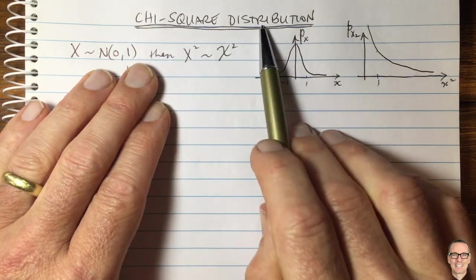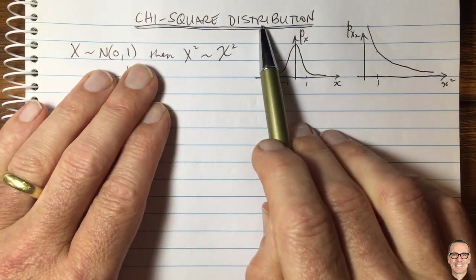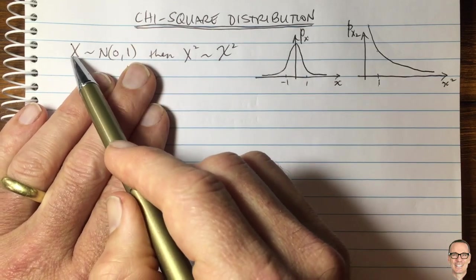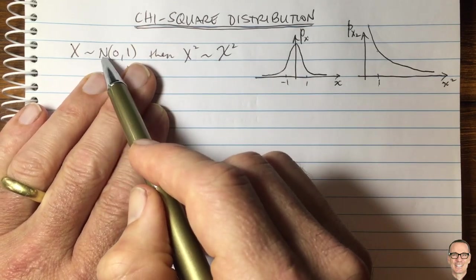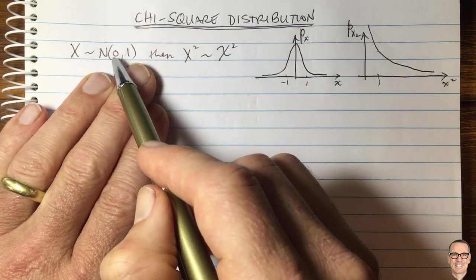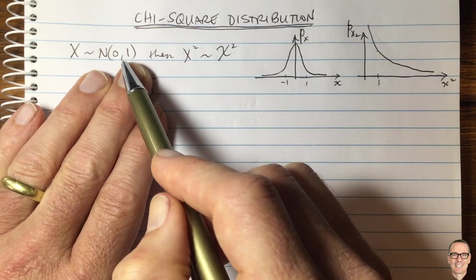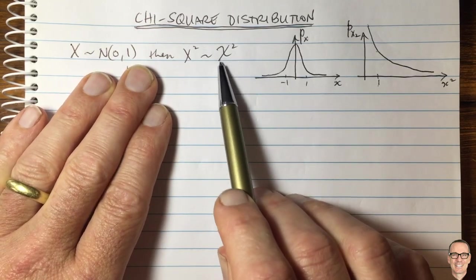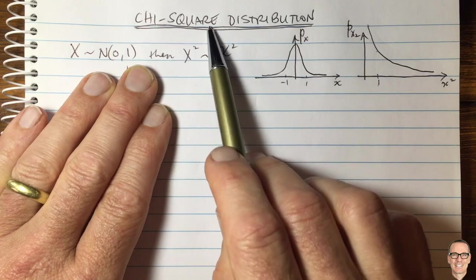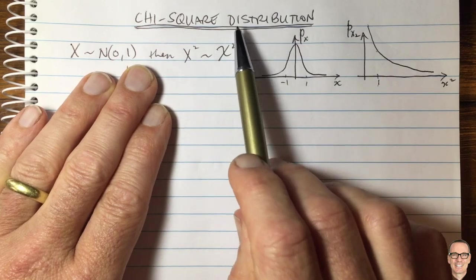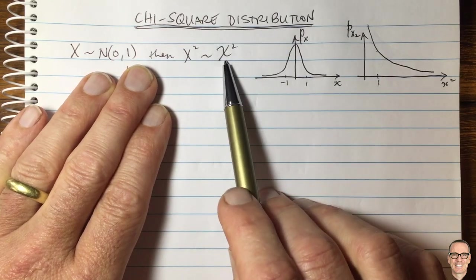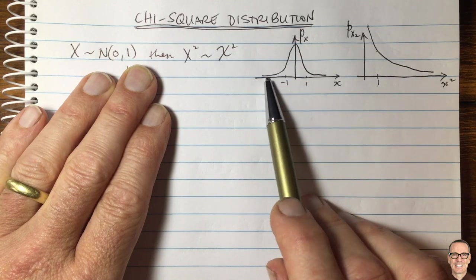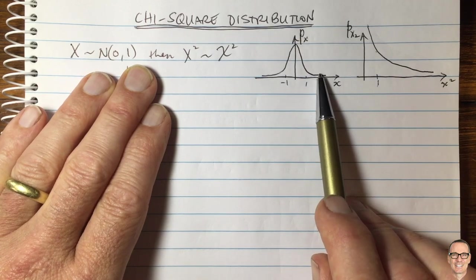So what is a chi-square distribution? If you have a random variable X which is Gaussian distributed with zero mean and standard deviation 1, then X squared is going to have a chi-square distribution. That's the definition of the chi-square. Here's a Gaussian distribution density function, and we're going to get an intuitive understanding of this chi-square.